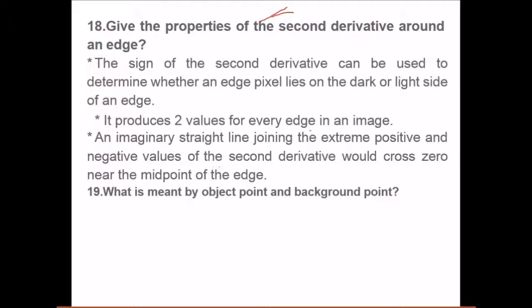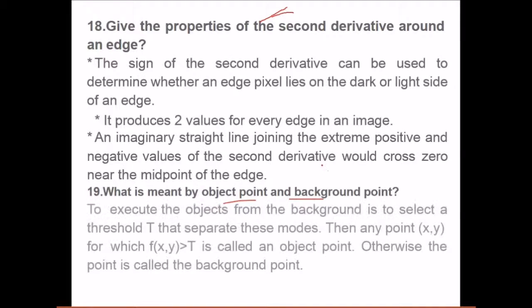What is meant by object point and background point? To extract or differentiate the objects from the background, we select a threshold T that separates these modes. Any point (x,y) for which f(x,y) is greater than T is called the object point; other points are known as background points.